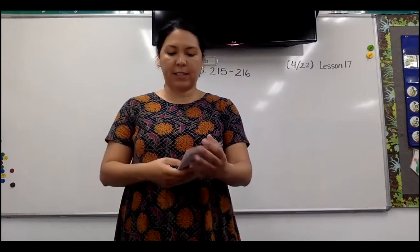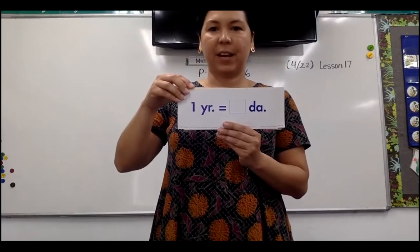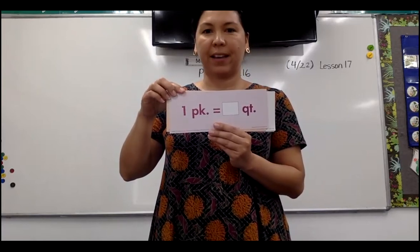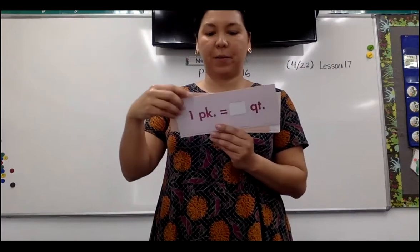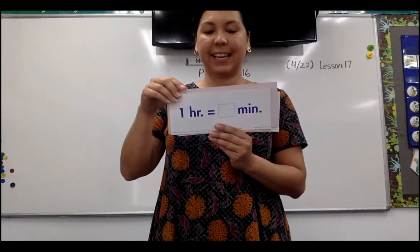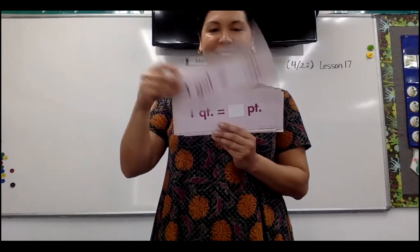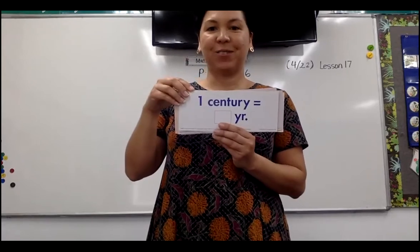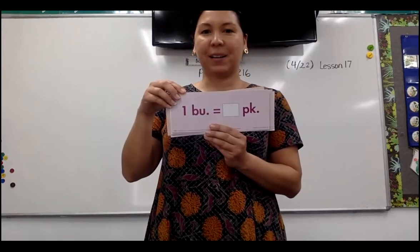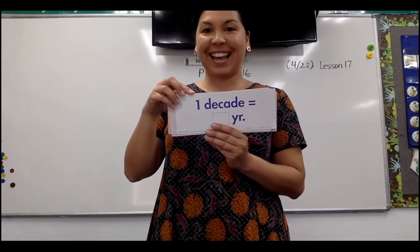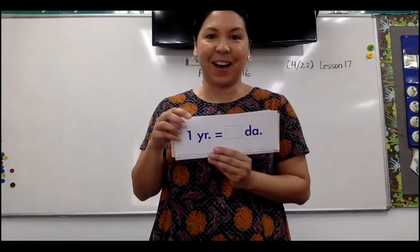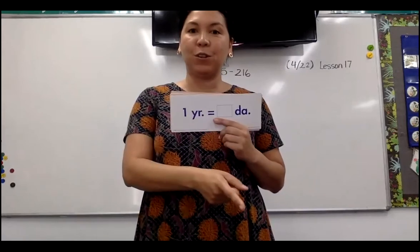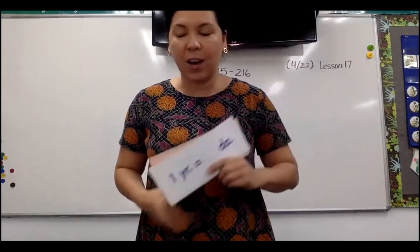This is going to be a little faster round. Days in a year? 365. Inches in a foot? 12. Quarts in a peck? Eight — that was a tricky one, eight quarts in a peck. Minutes in an hour? 60. Pints in a quart? Two. Quarts in a gallon? Four. Weeks in a year? About 52. Years in a century? 100. Pecks in a bushel? Four. Years in a decade? 10. Days in a year? 365. There's going to be a part at the bottom of our paper today that has this on it, so I'm going to see if you can do it. If not, rewind to the beginning of the video and you can see the answers.